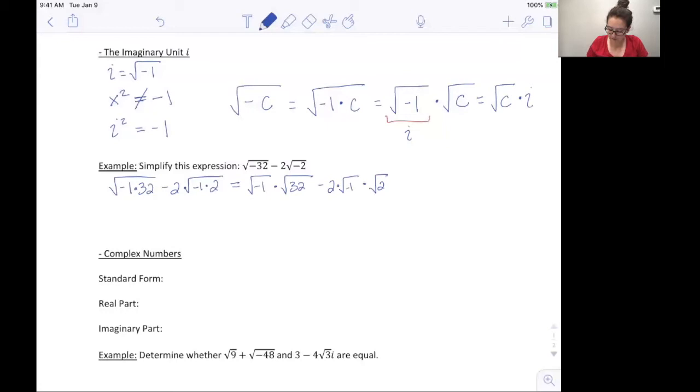We can now rewrite our square roots of negative one as i. So square root of 32i minus two square root of 2i. The square root of 32 is not all the way simplified. So let's write it out again, 32, I look at it and I see 16 times 2 which I know I can take the square root of 16 so we'll write it out as 16 times 2 times i minus 2 square root of 2 times i equals square root of 16 is 4 square root of 2i minus 2 square root of 2i.